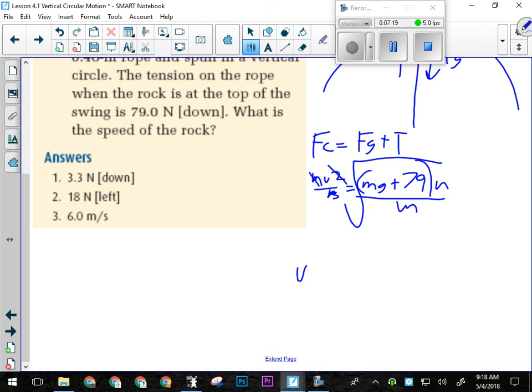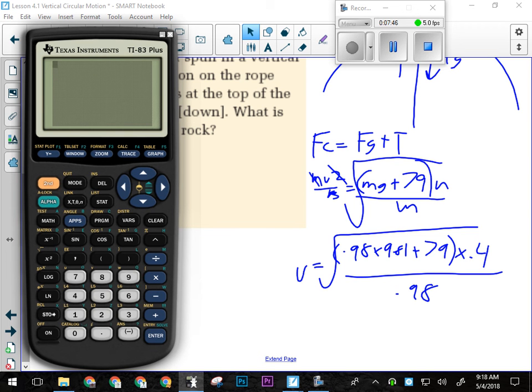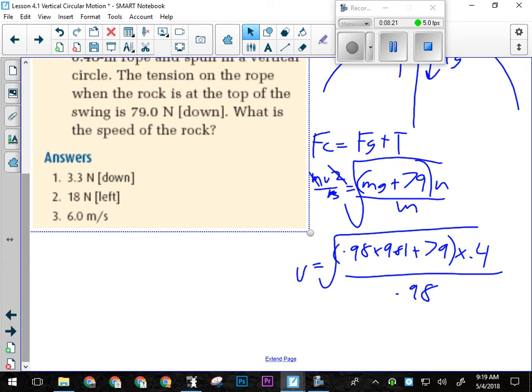So now if I plug in my numbers here, I'm going to have that v is going to equal, what was the mass of the rock? 0.98. So 0.98 times 9.81 plus 79 times the radius, which was 0.4. So we got 0.98 times 9.81 plus 79 times 0.4 divided by 0.98. So we're looking at a speed of 6 meters per second. In terms of the mathematics, that's probably the trickiest. In terms of the formula, the manipulation in algebra, that's probably as tricky as they get. Any questions on that one?